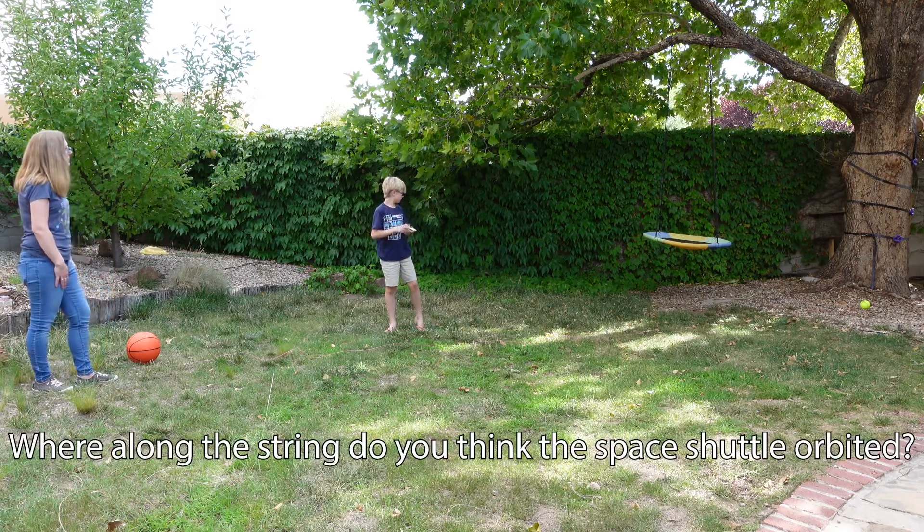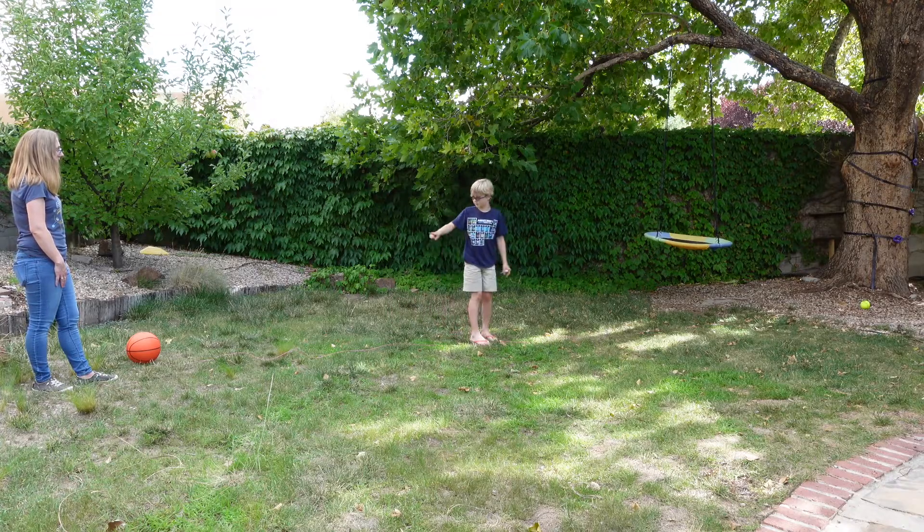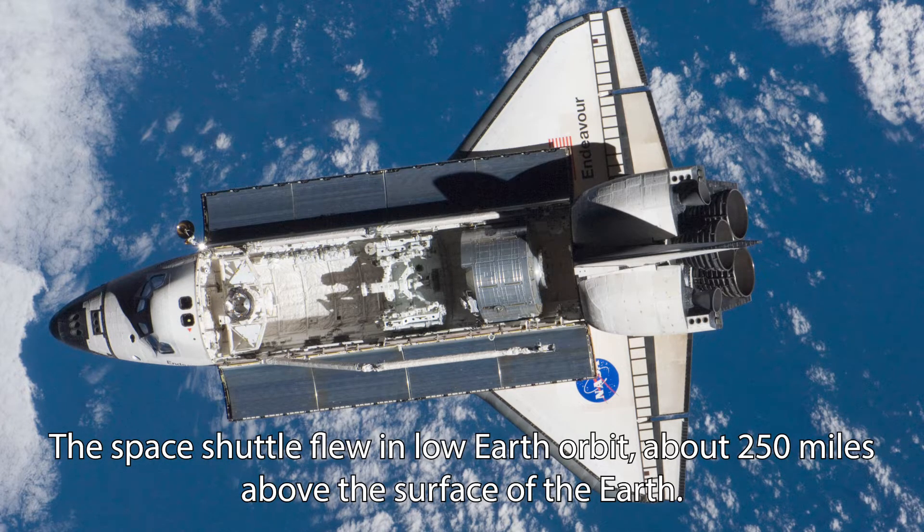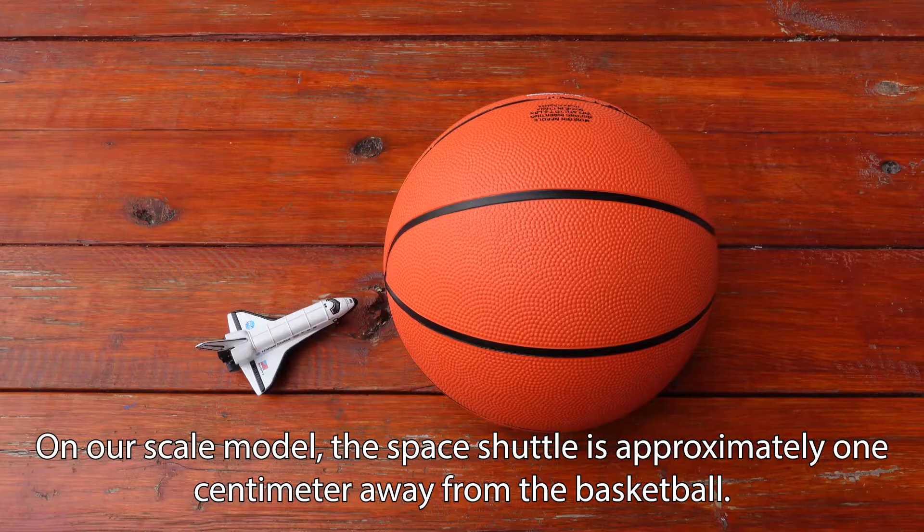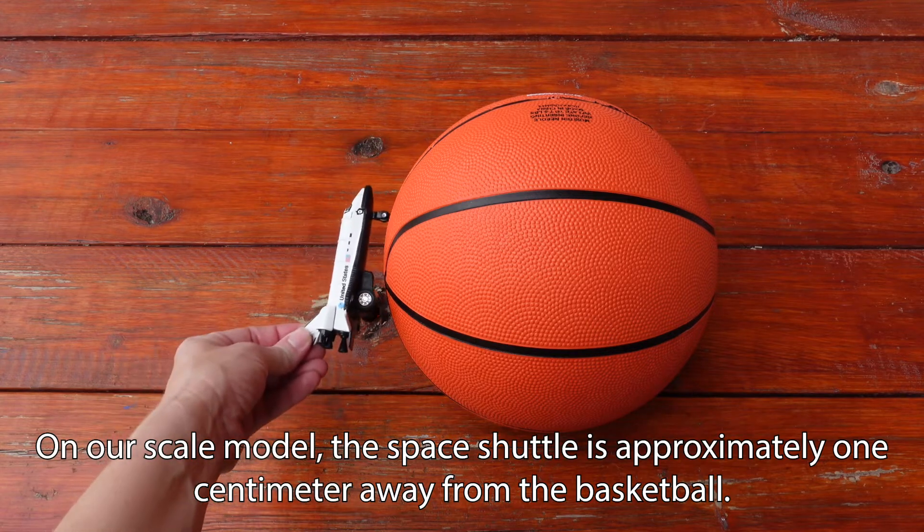Where along the string do you think the Space Shuttle orbited? The Space Shuttle flew in low Earth orbit, about 250 miles above the surface of the Earth. On our scale model, the Space Shuttle is approximately one centimeter away from the basketball.